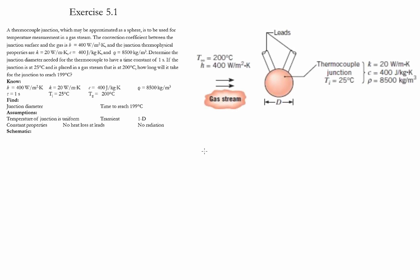Exercise 5.1. In this exercise we have a thermocoupled junction which can be used to measure the temperature of a gas stream. The first task is to find out the diameter of this junction in order to have a time constant of one second.